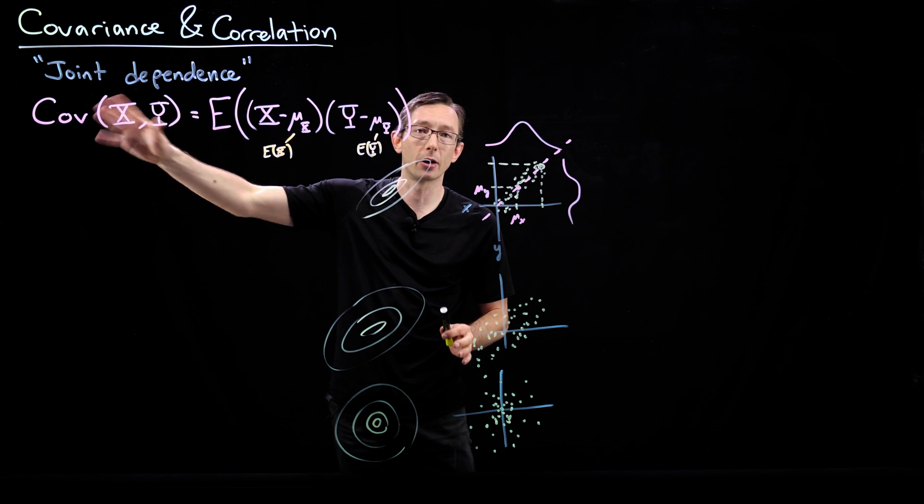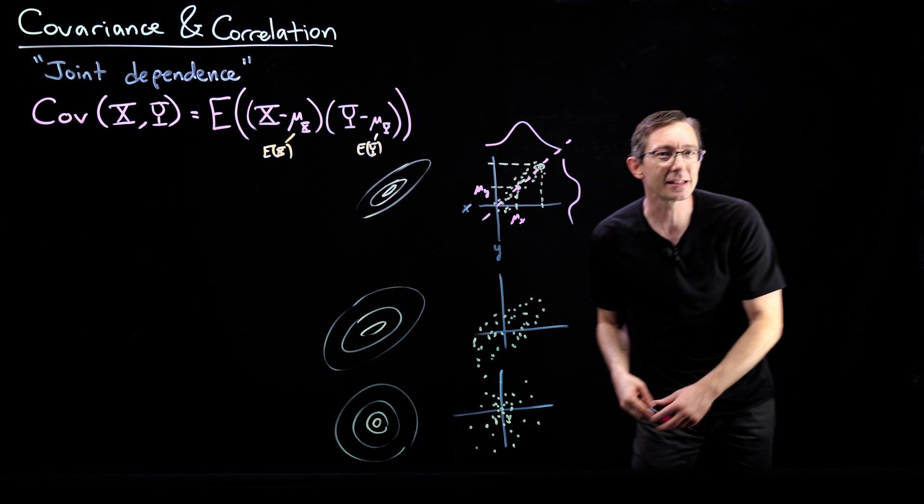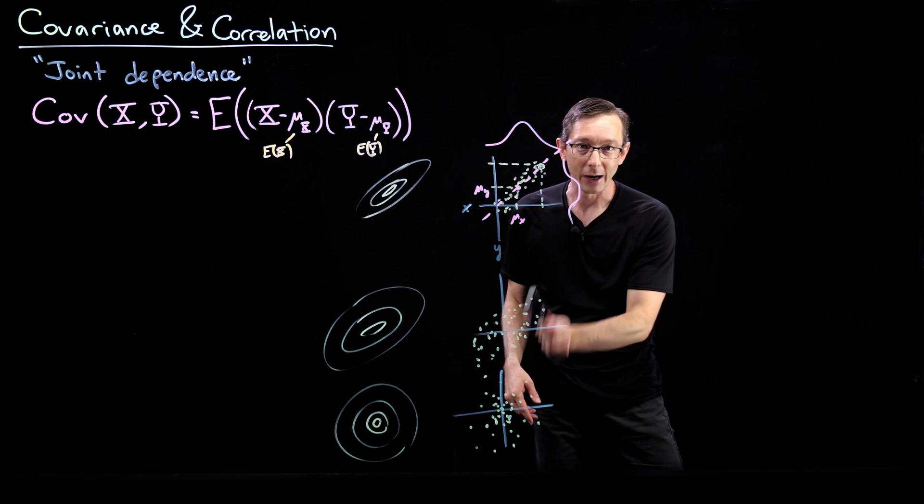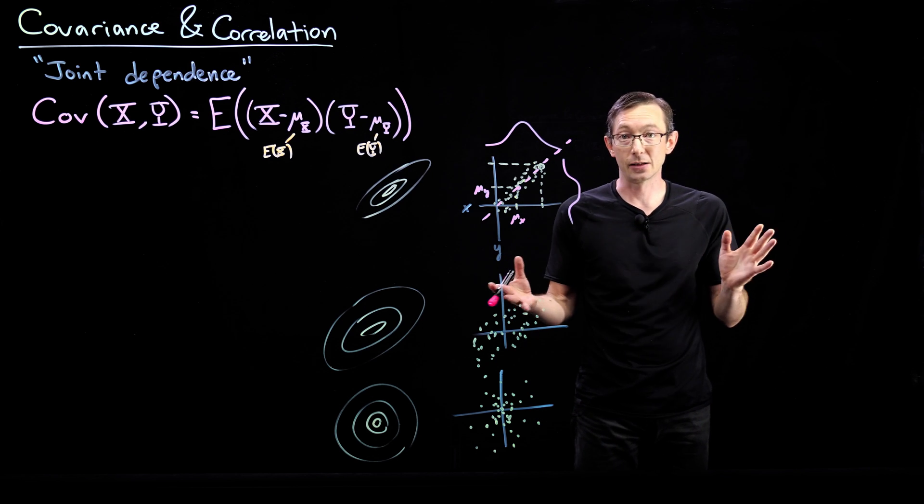So for independent x and y, the covariance will be zero. And I thought it would just be nice, I've actually hinted at this a few times. That this joint radially symmetric 2D Gaussian distribution, x and y are independent.